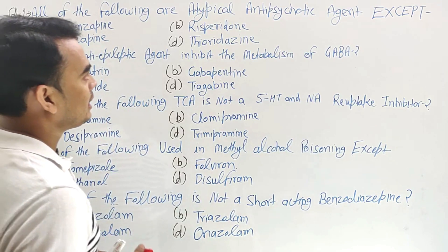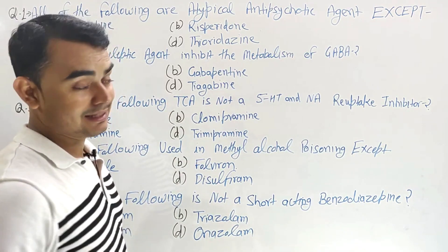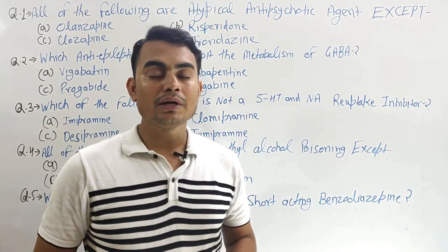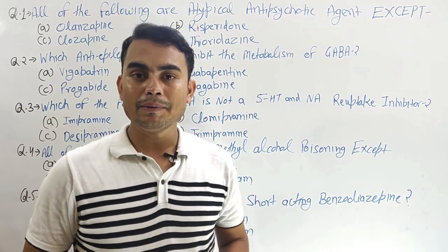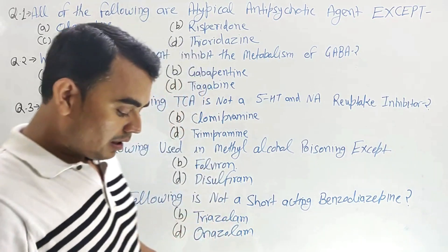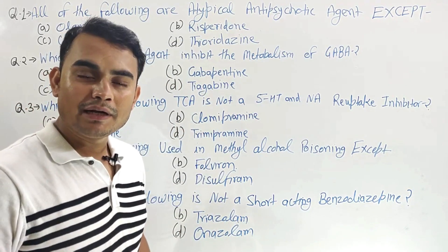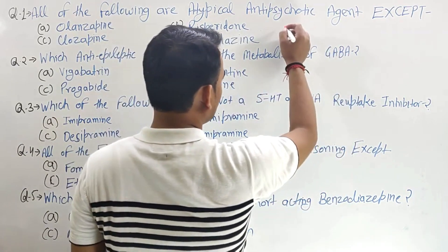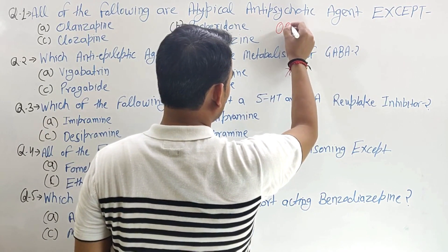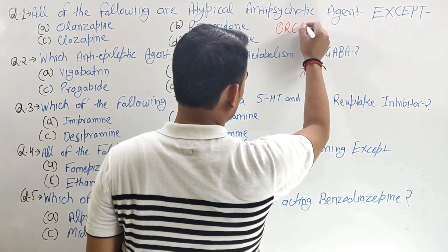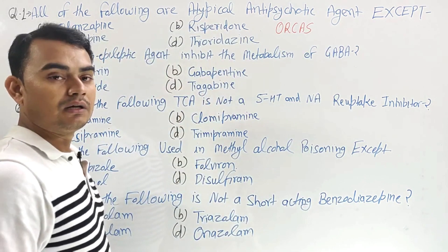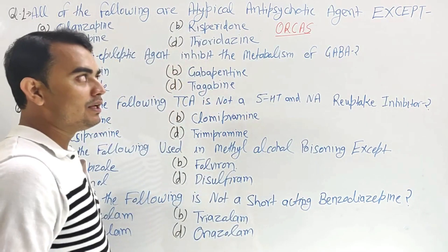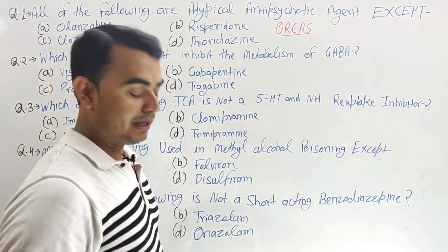First question: all of the following are atypical antipsychotics except. As we know, antipsychotics are of two classes: typical and atypical. How will you remember the atypical derivatives? A very easy trick — just remember the word ORCAS. If you remember this word, you will remember all the atypical antipsychotics.